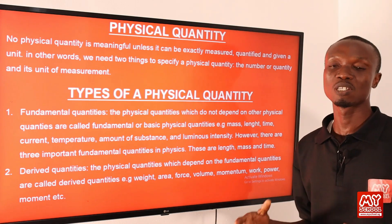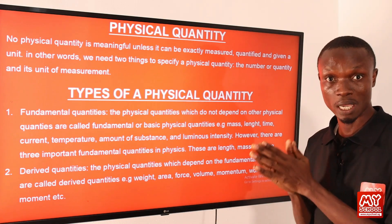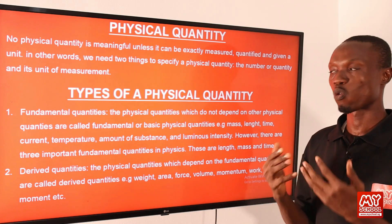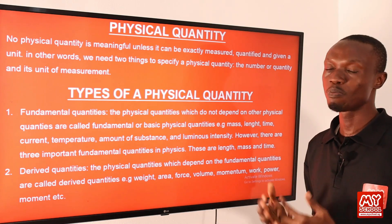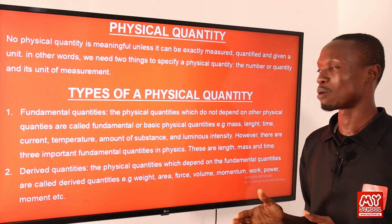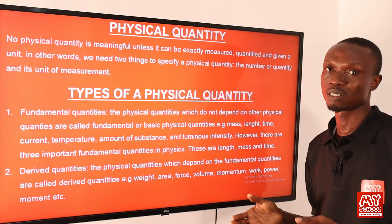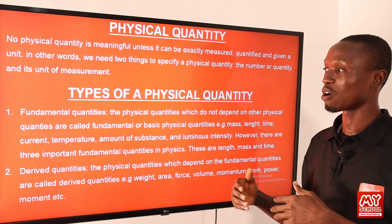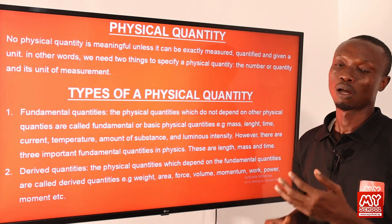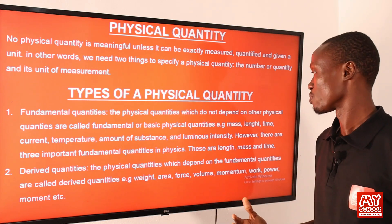So to specify a physical quantity, we need two things: the number or quantity and its unit of measurement. In physics, physical quantity is divided into two: fundamental quantities and derived quantities. So what do we mean by fundamental quantities? Fundamental quantities are those quantities that do not depend on other physical quantities — meaning these quantities can stand alone.